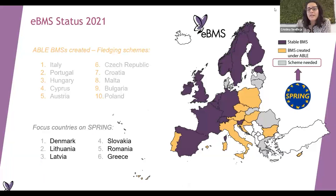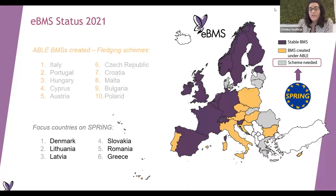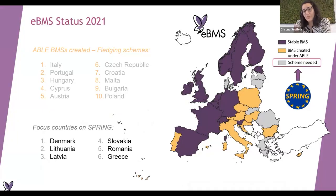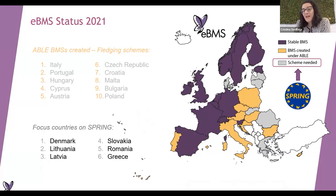Now in the current SPRINT project, our aim is to create butterfly monitoring schemes in the remaining countries shown in gray. Slovakia is part of it, so we really want to create the BMS there. But you can see other countries like Denmark - which is impressive that they don't have it - or Romania, or Greece, that are really diverse countries that we need to have included.